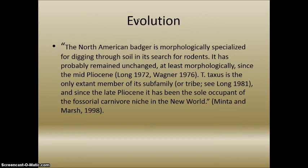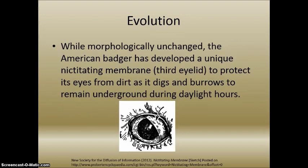For evolution, the North American badger is morphologically specialized for digging through soil in its search for rodents as food. It has probably remained morphologically unchanged since at least the mid-Pliocene era. Taxidea taxus is the only extant member of its sub-family and since the late Pliocene has been the sole occupant of the fossorial carnivore niche in the New World. While morphologically unchanged, the American badger has developed a unique nictitating membrane — a third eyelid — to protect itself from dirt as it digs and burrows underground during daylight hours. The picture shows an arrow indicating that nictitating membrane.